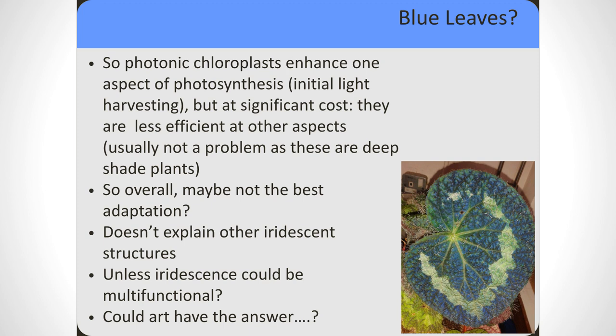Although the photonic structure enhances light capture and harvesting, it becomes a disadvantage when it comes to operating efficiency. So photonic chloroplasts or iridoplasts enhance one aspect of photosynthesis — initial light harvesting — but at significant cost, being less efficient at other aspects. This is usually not a problem for most iridescent plants because these are usually deep shade plants. But maybe this isn't the best adaptation overall, and it doesn't really explain the multilayers in the cell wall either. There might be another reason: iridescence could actually be multifunctional.